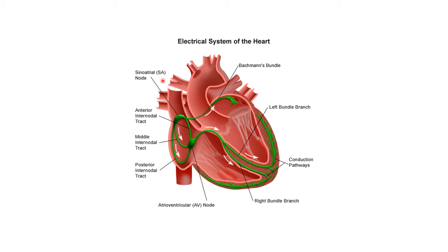The sinoatrial node, or SA node, is the primary pacemaker of the heart, which generates impulses automatically. Those impulses spread through the conducting system of the heart, and as they spread through the conducting system, the impulses also spread to the muscles of the heart — namely the atria and ventricular muscles. As the impulses pass through the muscles of the heart, that electrical activity leads to a mechanical activity of contraction and relaxation of the heart. In the following slides, I will talk in more detail about the electrical activity that occurs in the muscles of the heart.